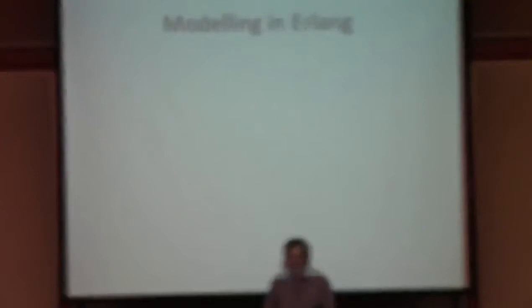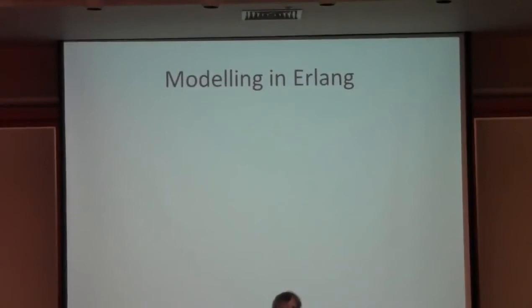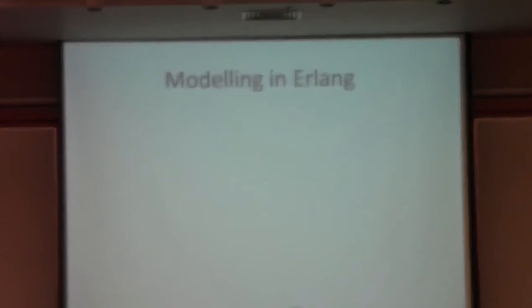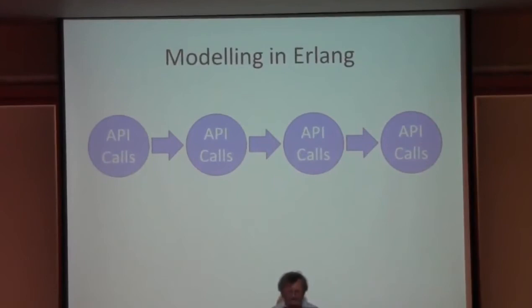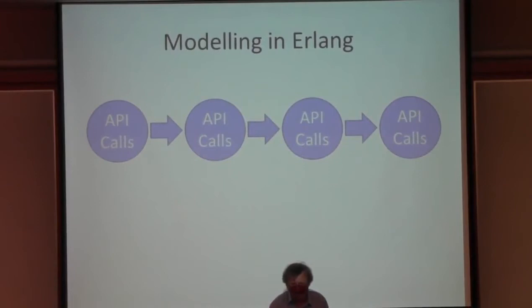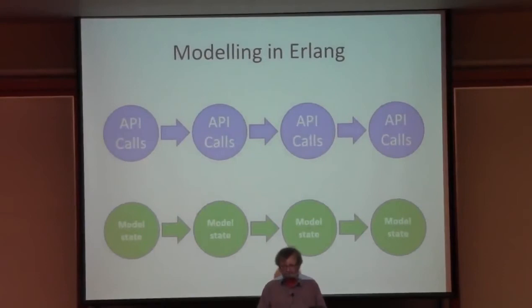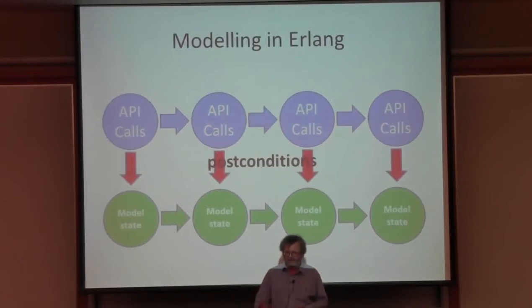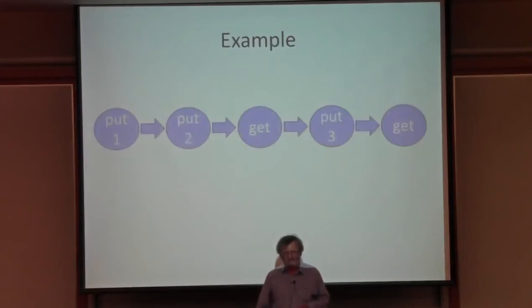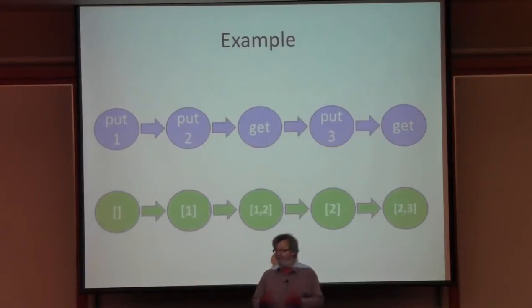Unlike simple functions, the C code has side effects and internal state, and we have to model that in an Erlang specification. The approach we always use for testing stateful code is: generate test cases that are a sequence of API calls, define a functional model of the state, define state transitions for each API call, and check post-conditions - verifying that the actual result from calling C corresponds to the model state. A test case might put 1, put 2, get a value, put 3, do another get, and we model the state as simply the list of values that should be in the queue.